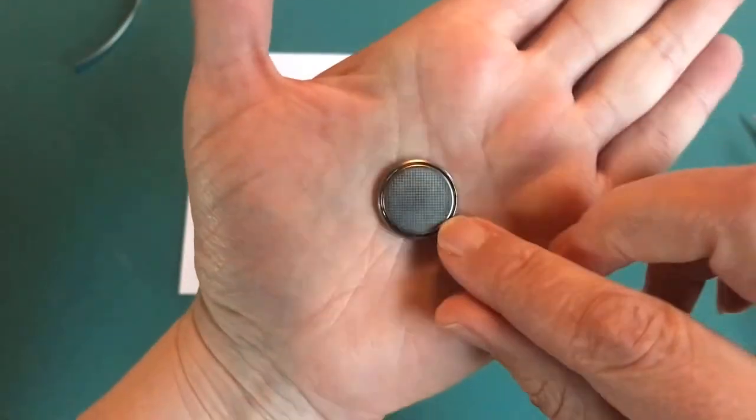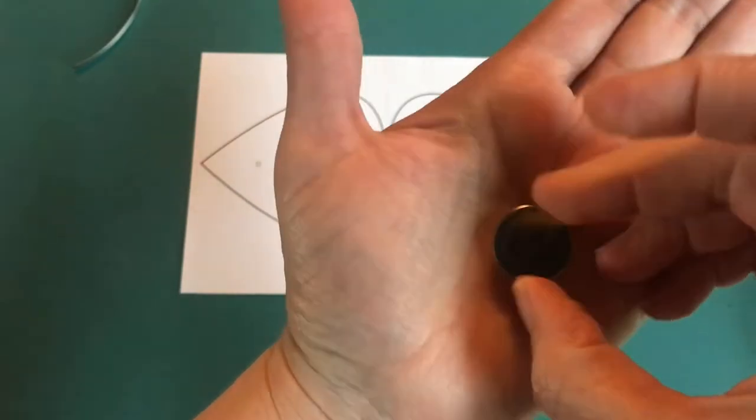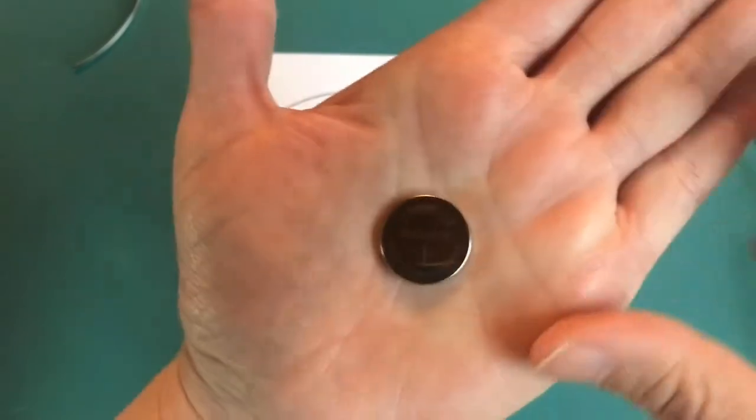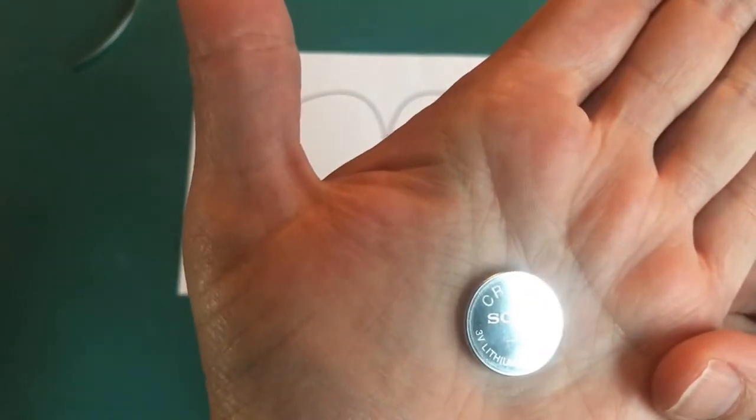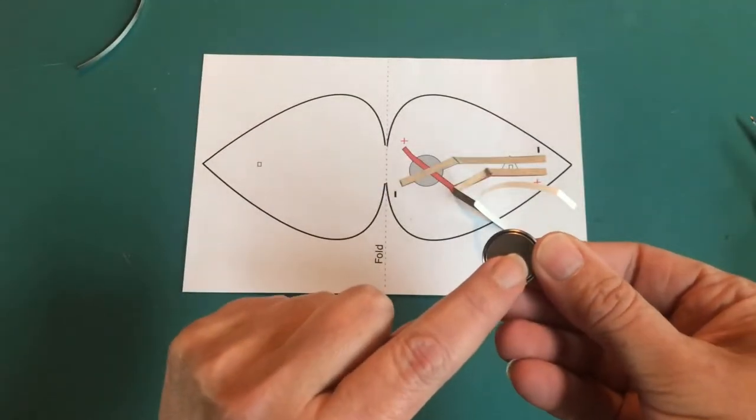Take a look at your battery. One side is bumpy. The other side is smooth and has writing on it, and it also has a plus sign on it. The bumpy side is the negative.